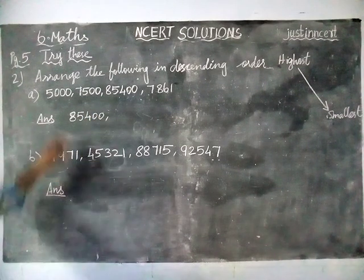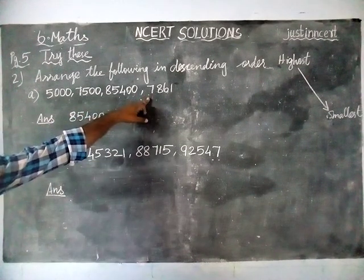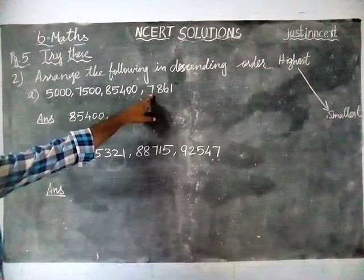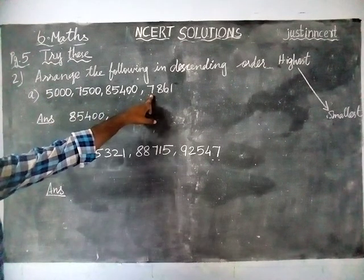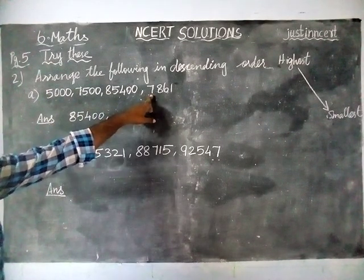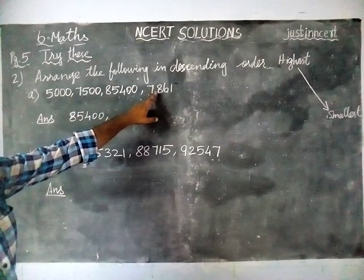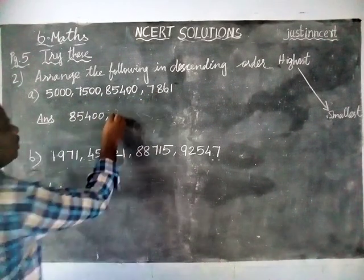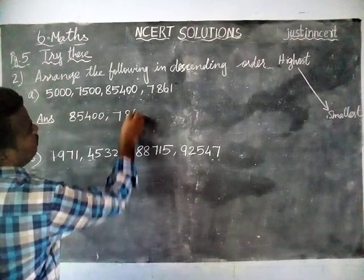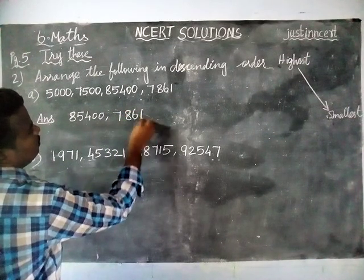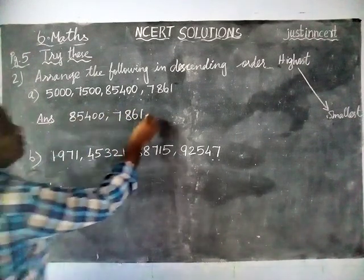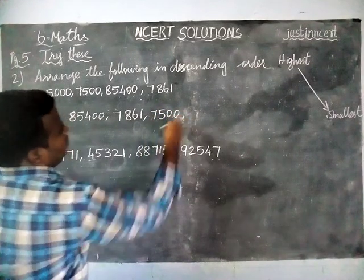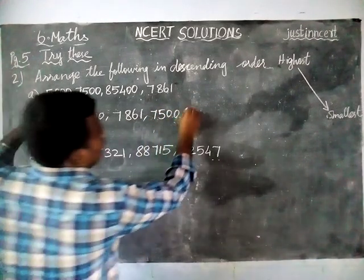Next, we have 1, 2, 3, four-digit numbers. In this, this is the smallest value. Here we have 2 numbers which have thousands place 7. So, in this, the greatest number is 7,861. Next number is 7,500. At last, the smallest value is 5,000.